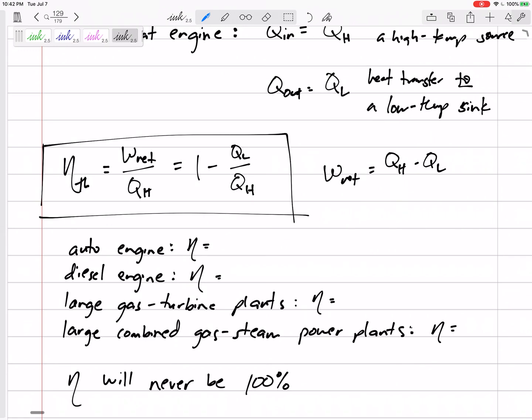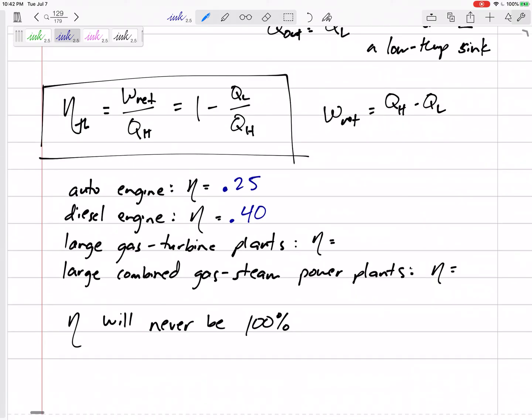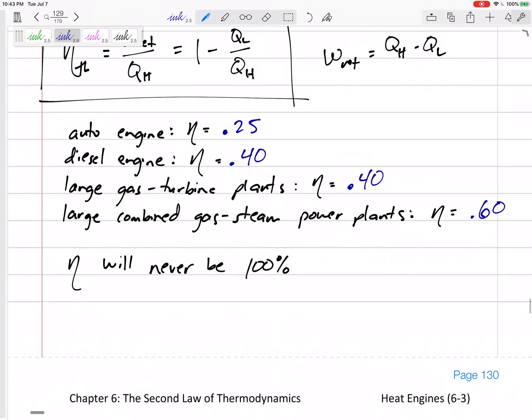For most car engines, η is about 0.25 or 25%. A diesel engine, about 0.40 or 40%. Large gas turbine plants, 0.40. A combined gas-steam power plant, 0.60 or 60%, which is very good. The efficiency will never be 100%, even if it was ideal.